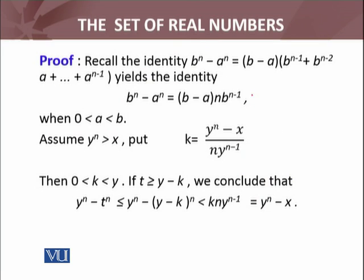Now the second case is when y^n > x. For this, I cleverly suppose a number k. By construction, k is between 0 and y, which you can check easily.